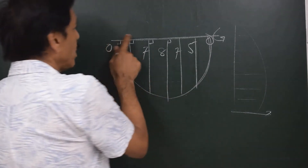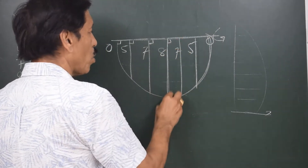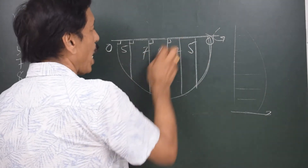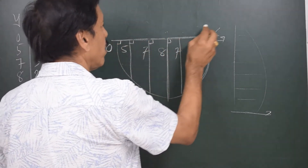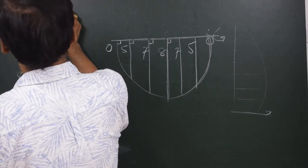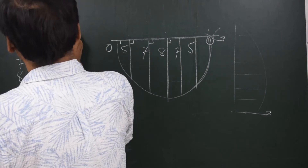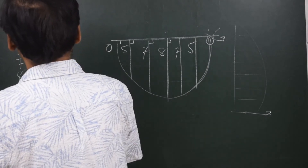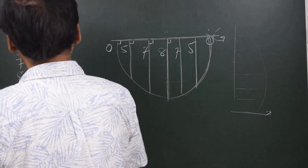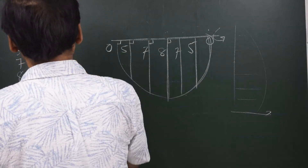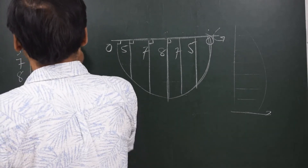The multipliers are 1, 3, 3, 1 for the first group and 1, 3, 3, 1 for the second group. The middle ordinate being common, instead of 1 I write 2, so it becomes 1, 3, 3, 2, 3, 3, 1. The third column is Y·dx — the product of columns 1 and 2. The values are: 0, 15, 21, 16, 21, 15, 0. The total is 88.